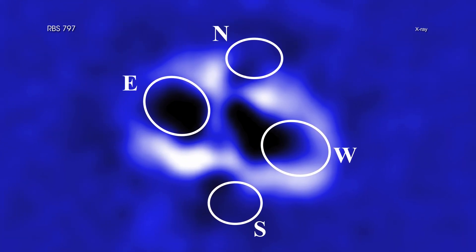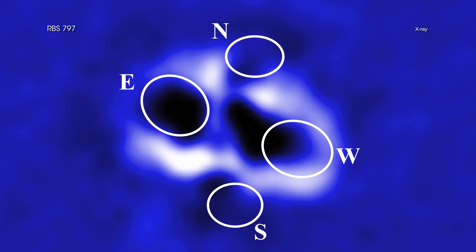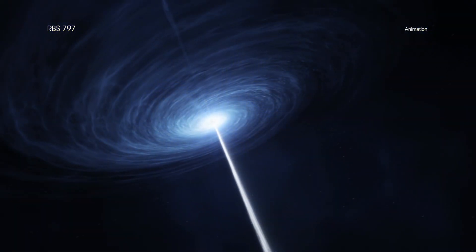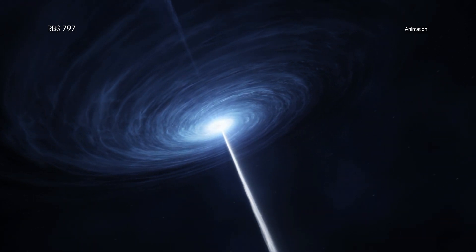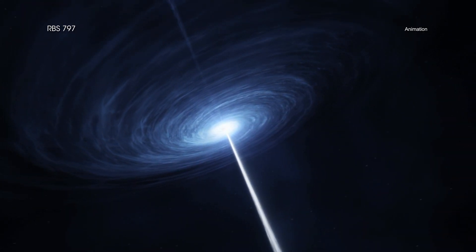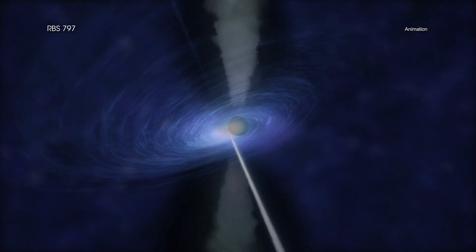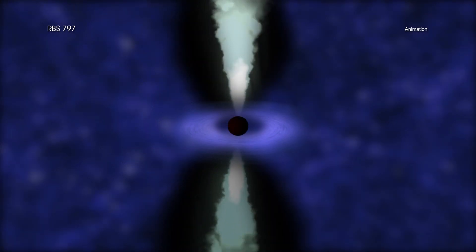These types of cavities have been seen before in other galaxy clusters. Scientists think they are the result of eruptions from regions near a supermassive black hole in the middle of the massive central galaxy. As matter flies away from the black hole as jets in opposing directions, it blows cavities in the hot gas.